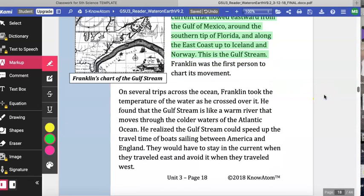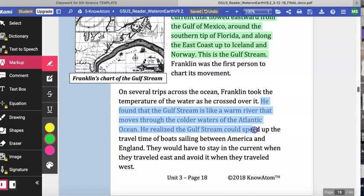On several trips across the ocean, Franklin took the temperature of the water as he crossed over it. He found that the Gulf Stream is like a warm river that moves through the colder waters of the Atlantic Ocean. He realized the Gulf Stream could speed up the travel time of boats sailing between America and England. They would have to stay in the current when they traveled east and avoid it when they traveled west.